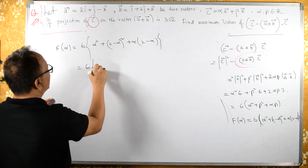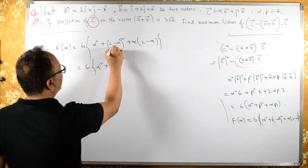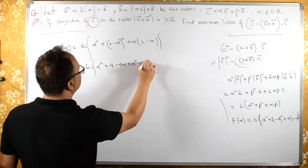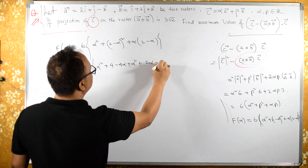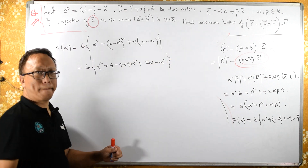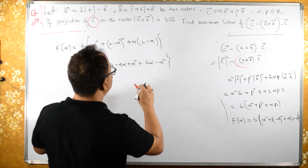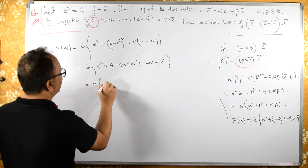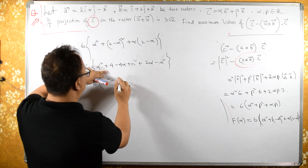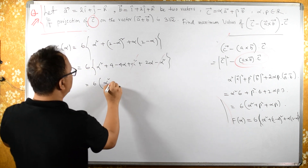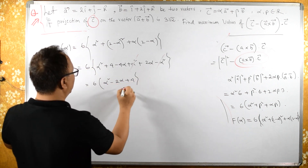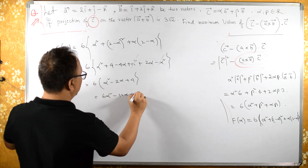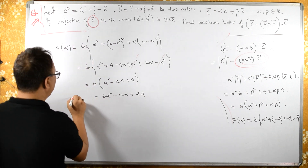Expanding: 6[α² + (4 − 4α + α²) + (2α − α²)]. The α² and −α² terms cancel, leaving 6[α² − 2α + 4]. Therefore f(α) = 6α² − 12α + 24.